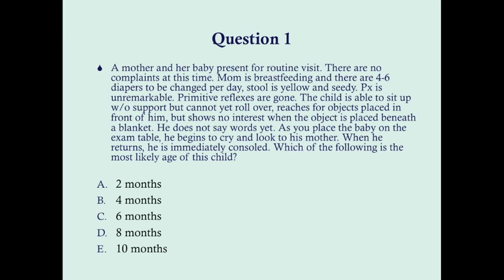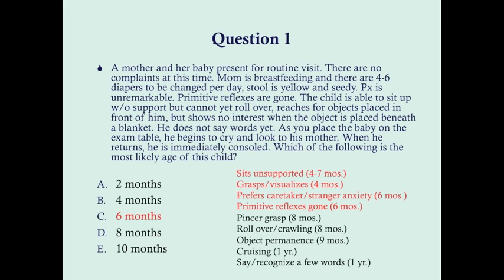The answer to this question is C, six months. This is a very common style of question on the USMLE — they want you to know about some of the major developmental milestones. In clinical practice, you're not going to have to answer a question like this because you'll know the age of the child.